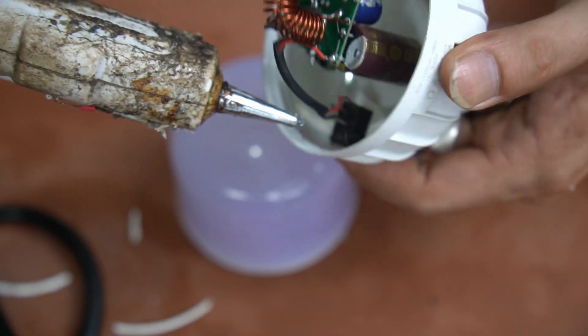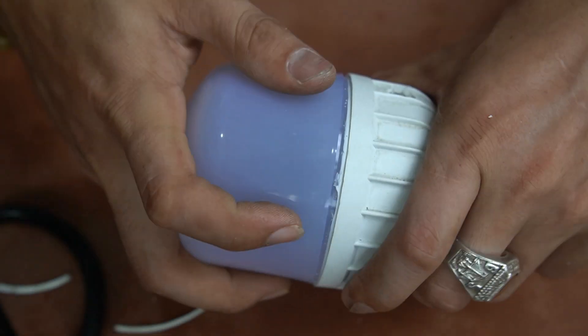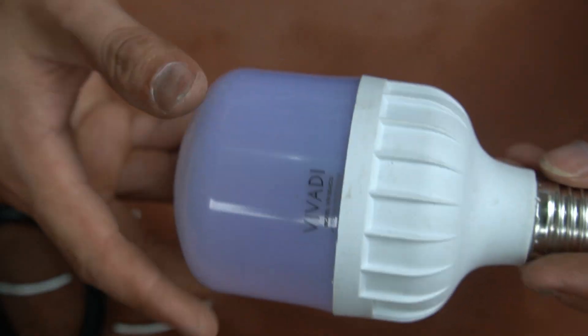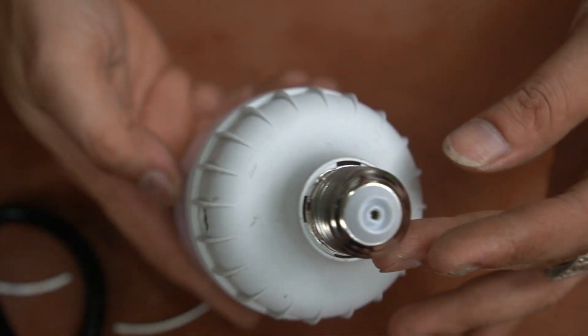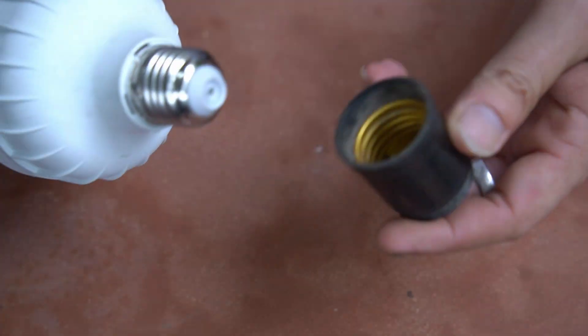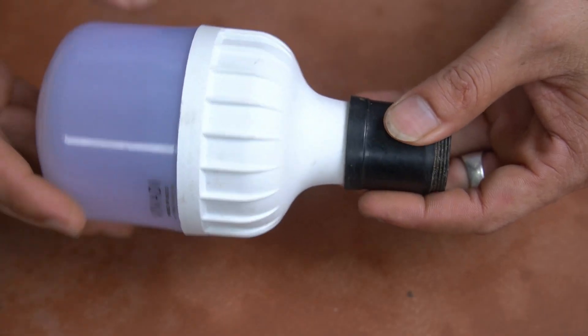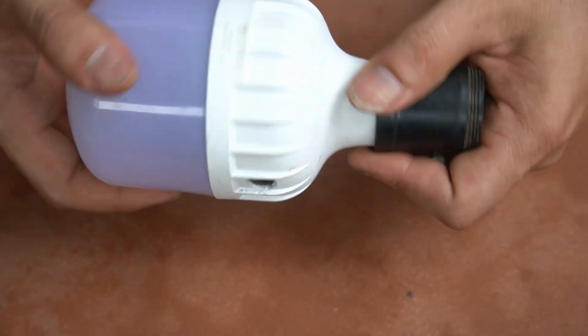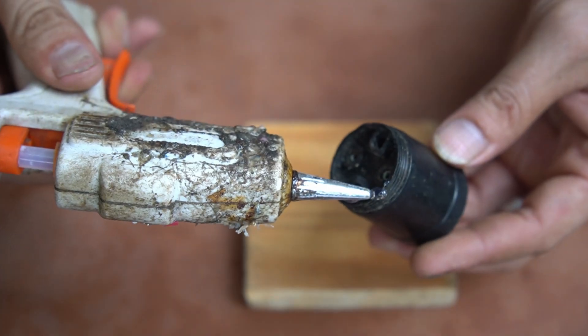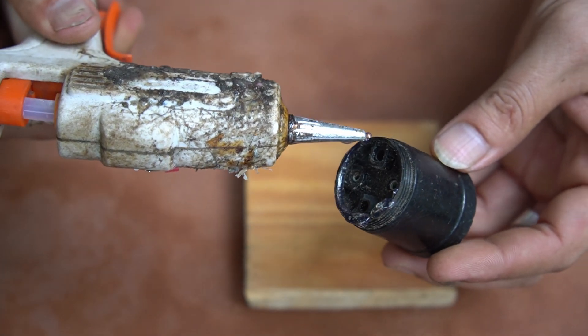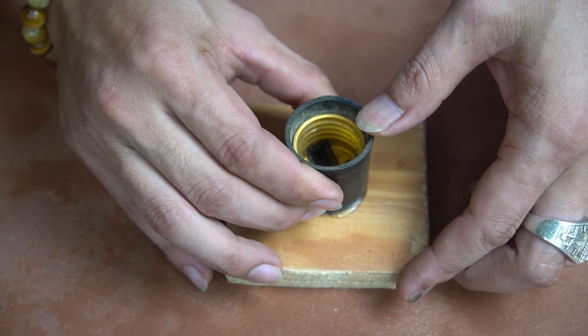Next I used a 90mm diameter PVC pipe cap to make a base. I used a drill to make two round holes on the plastic base. Use specialized glue to fix the plastic tube to the plastic base.